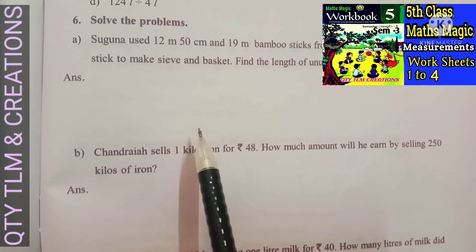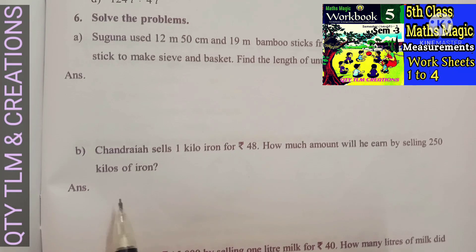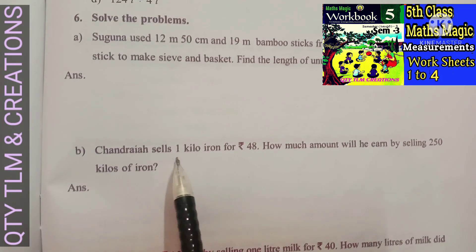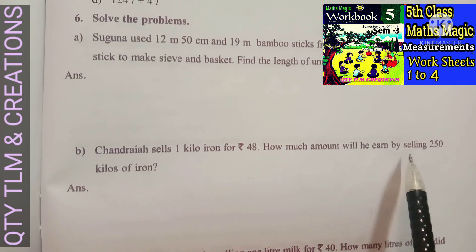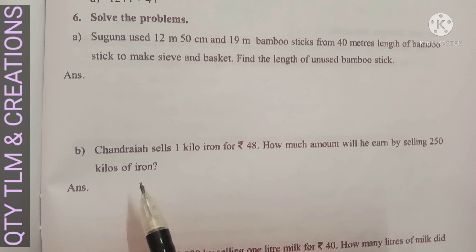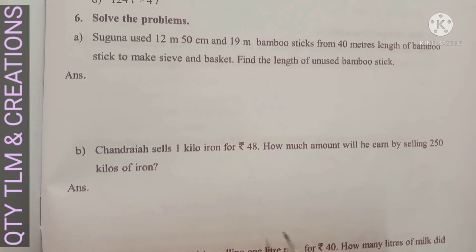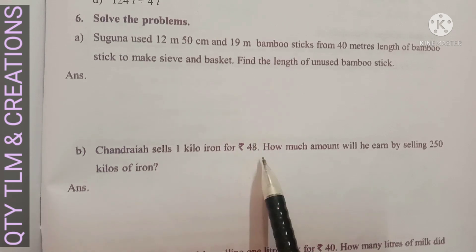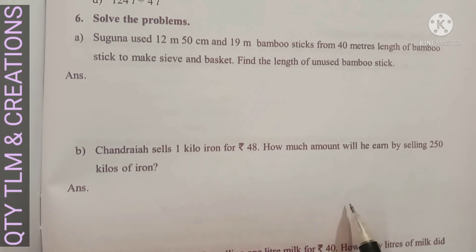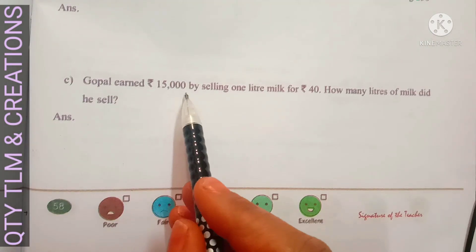(b) Chandriya sells 1 kilogram of iron for 48 rupees. How much will he earn by selling 250 kilograms of iron? Iron cost for 1 kilogram equals 48 rupees. Chandriya sold 250 kilograms. Amount earned equals 250 multiplied by 48, which equals 12,000 rupees.